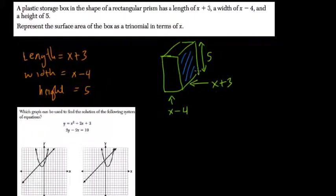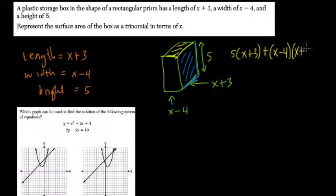So what's the area of this face right here? Well, that's x plus 3 times 5. So 5 times x plus 3. Next, we need to take care of this face on the top, and that's x minus 4 times x plus 3. So here we have this other face. That's x minus 4 by 5.